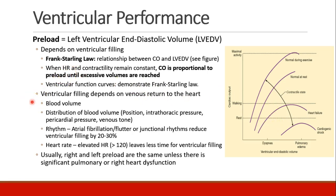Ventricular filling depends on venous return to the heart, so this depends on things like blood volume. Obviously if a patient is hypovolemic, they won't have much preload. Also, the distribution of their existing blood volume can change based on the patient's position, intrathoracic pressure, pericardial pressure, or venous tone. The patient's rhythm is also important — patients in atrial fibrillation, atrial flutter, or junctional rhythms are unable to fill their ventricles most efficiently, reducing ventricular filling by 20% to 30%, decreasing preload and cardiac output. And heart rate, to a point, is good for cardiac output, but when too elevated there isn't enough time for the heart to fill — stroke volume goes down, leading again to a decrease in cardiac output.